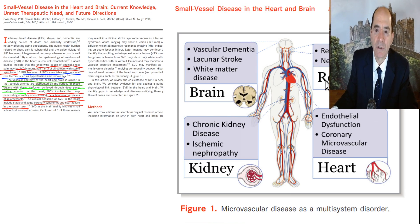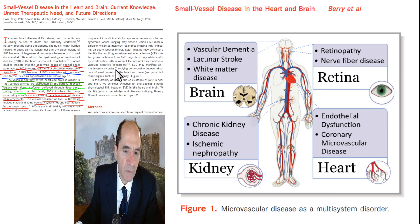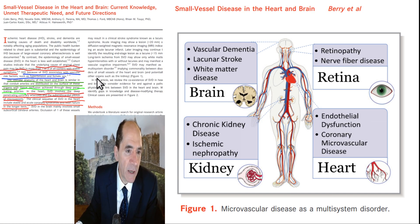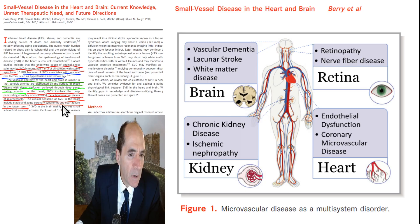Here's a similar article showing that the underlying cause of anginal chest pain may be due to small vessel disease in about one out of three patients — that's a lot. Ischemic heart disease because of small vessel disease associates with vascular risk factors — the usual suspects — and is actually more common in women than one would expect. The vascular anatomy of the heart and the brain is similar: conduit arteries on the outer surface, with tissue perfusion achieved through deep penetrating arteries. Microvascular angina in the heart is also called syndrome X.